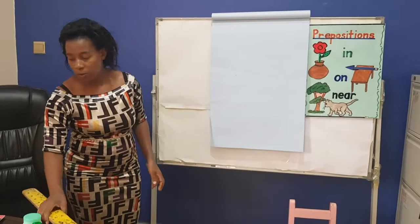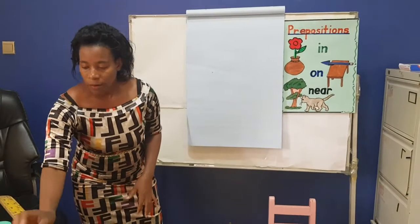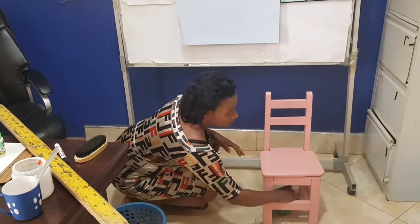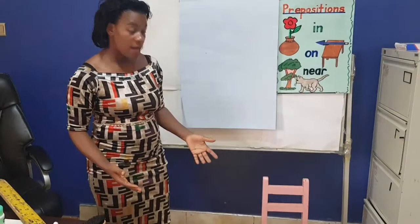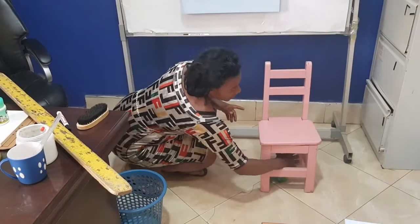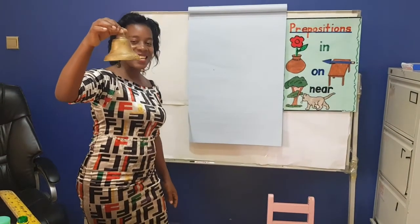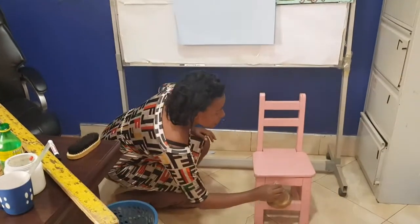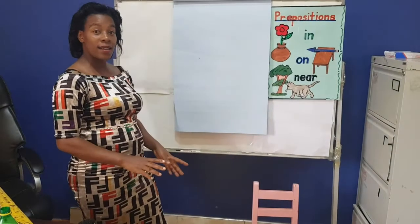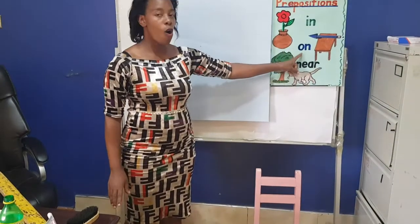We also have another preposition I've not put here, but it is also there. Look at this — this is a bottle. If I put it here, I will say the bottle is under the chair. I have this one — this is a bell. If I put it here, the bell is under the chair. So we've looked at under, in, on, and near.